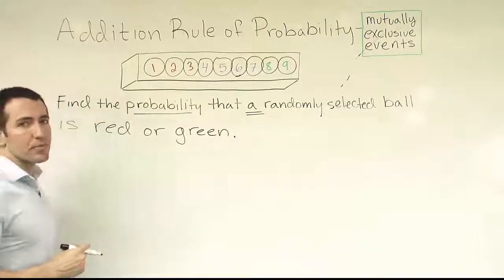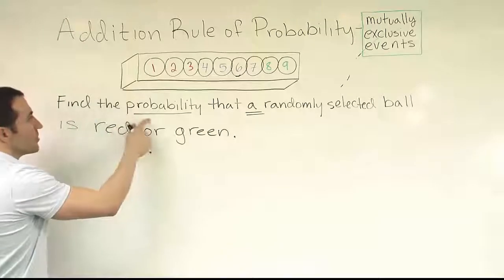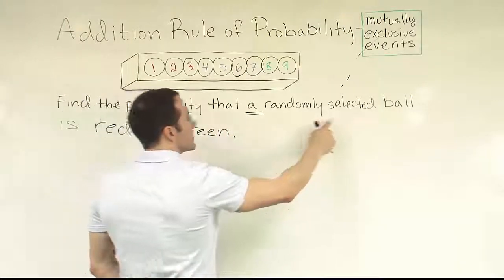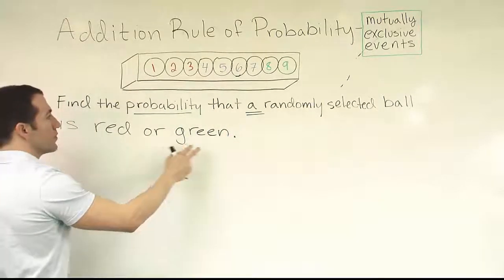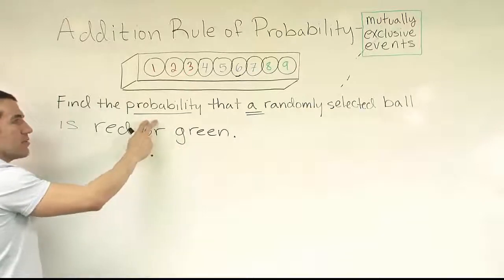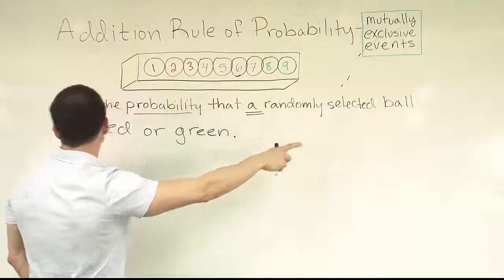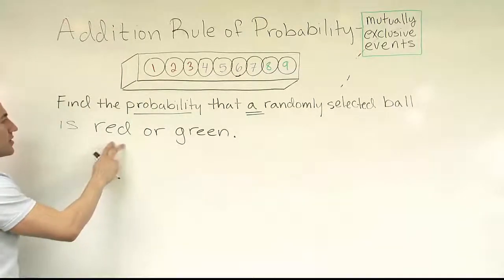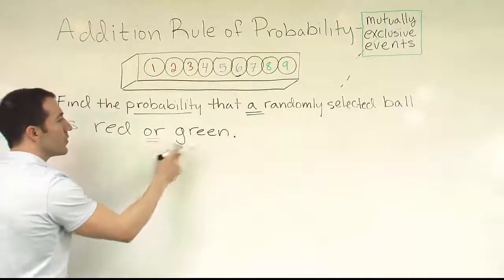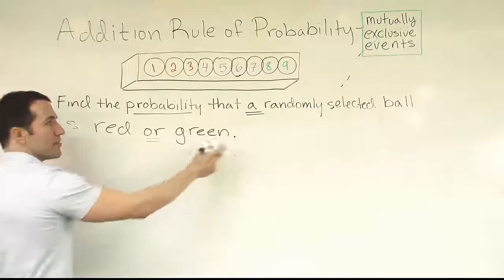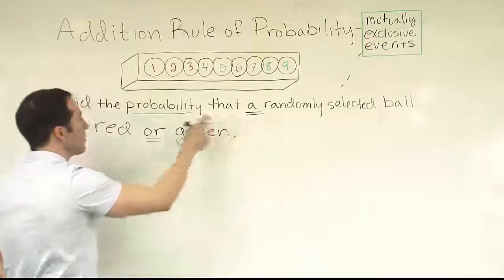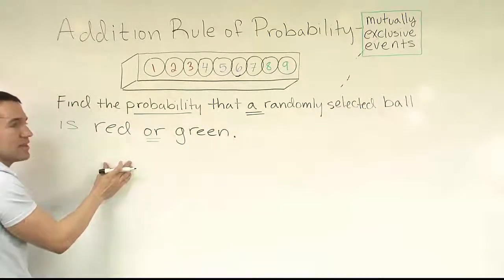So I read the problem. How do I know it's addition rule of probability? Well, it says find the probability that a randomly selected ball is red or green. So I know it's a probability question. Again, one thing is being selected. Just one ball is being selected from the group. I'm looking for the probability that it's red or green. So that word or, and the fact that we're taking only one item from the group and they're asking for probability, indicates to me this is addition rule.